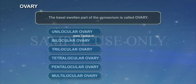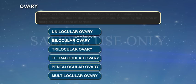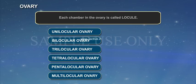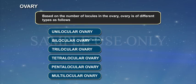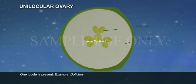Ovary: The basal swollen part of the gynoecium is called the ovary. It encloses the ovules. It shows one to many chambers or compartments due to the presence of septa, formed by the fusion of margins of adjacent carpels. Each chamber in the ovary is called a locule. Based on the number of locules in the ovary, the ovary is of different types.